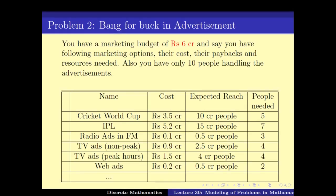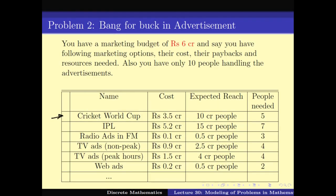One important thing here is that I cannot say I will buy half an ad in the Cricket World Cup — that cannot be done. Either I decide to invest in Cricket World Cup or not. It's a 0-1 setting. Similarly for radio ads, I cannot spend only 0.05 crore — you either spend 0.1 crore or nothing. You don't have the option of picking any advertisement option partially; you have to either go for it or not. This is what makes the problem interesting.